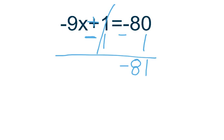Then you have to put the variable down which would be negative 9x equals negative 81. Then you would have to divide negative 9 on both sides to leave the x alone.